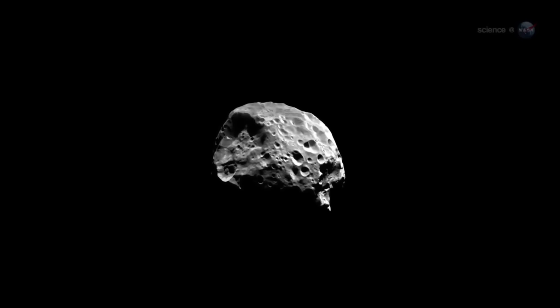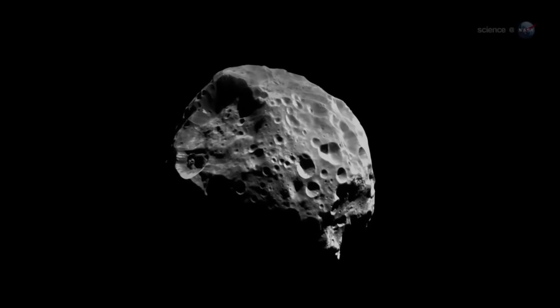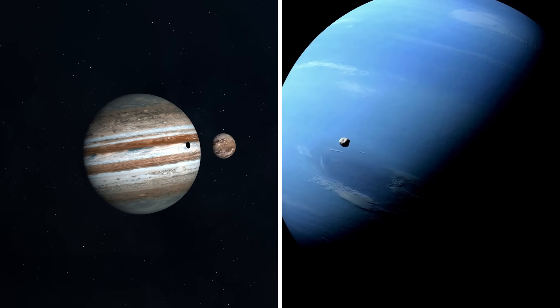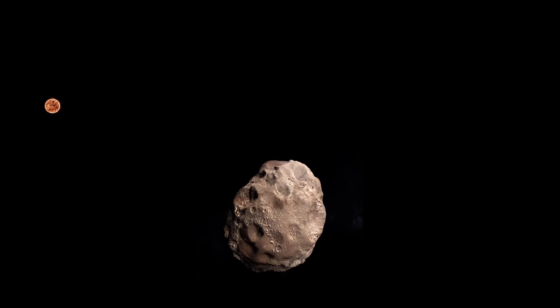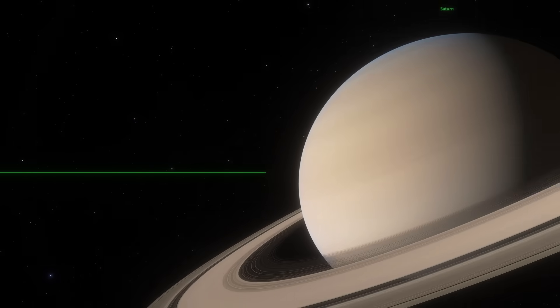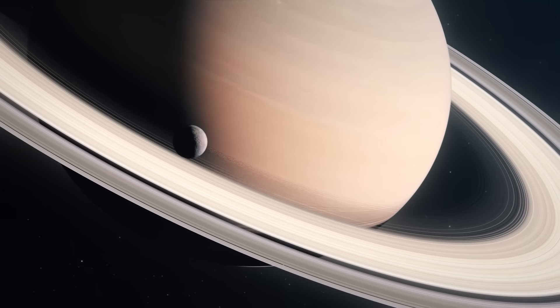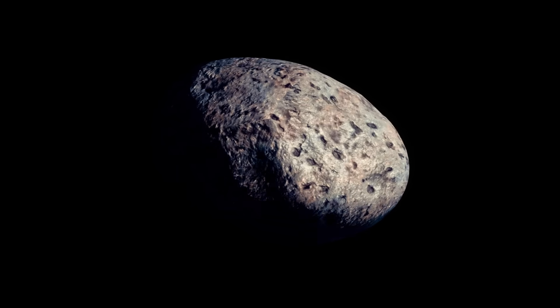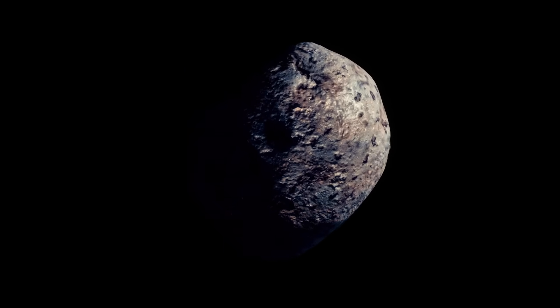Interestingly, this event could also explain the strange moons in our solar system, such as Saturn's moon Phoebe, which has a retrograde and distant orbit. Similarly, Jupiter and Neptune host several irregular moons that could have been trans-Neptunian objects displaced by the gravitational influence of this stellar flyby. This could explain why the outer planets have two distinct types of moons. Regular moons, which formed along with the planets and have stable, predictable orbits, and irregular moons, which have strange or retrograde, that is, backward orbits, and may have been captured from the outer solar system.